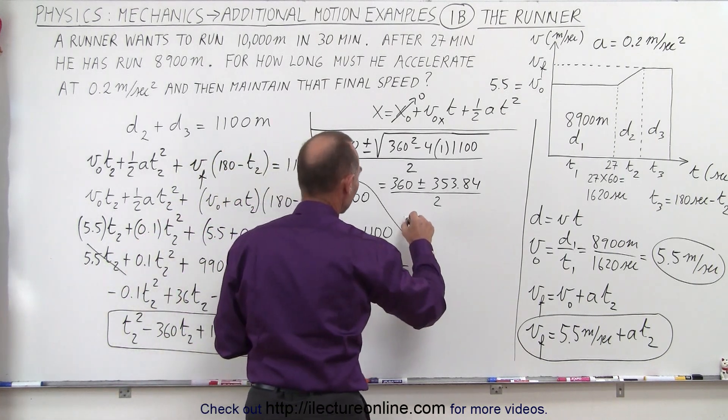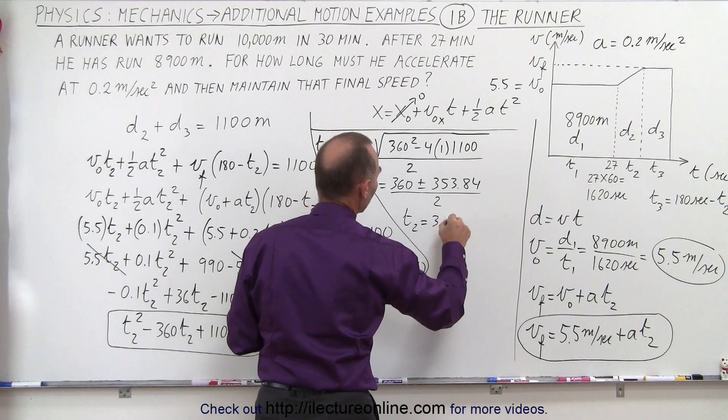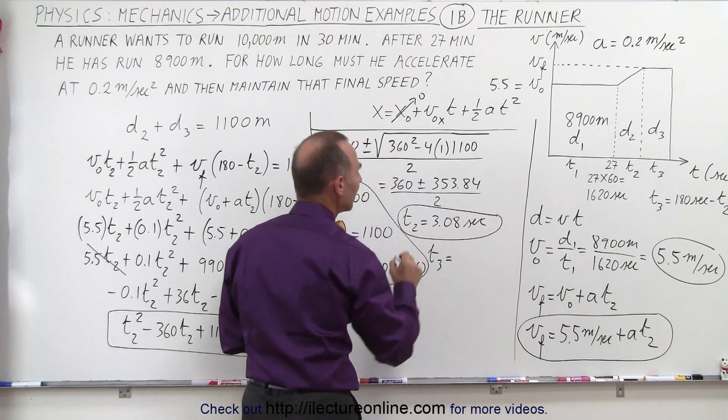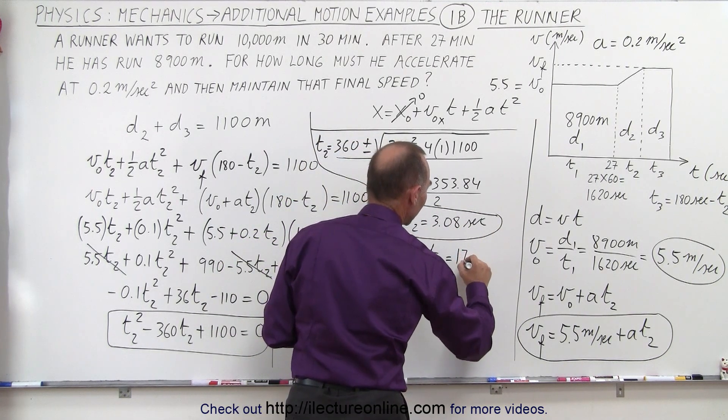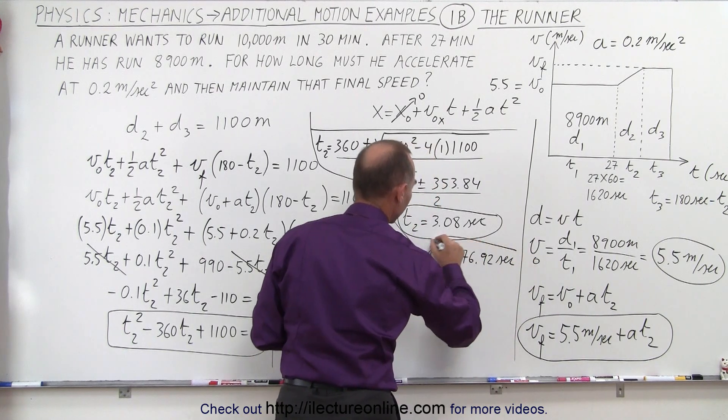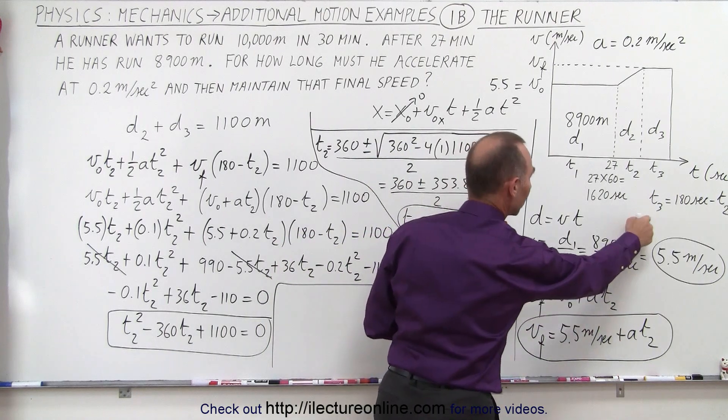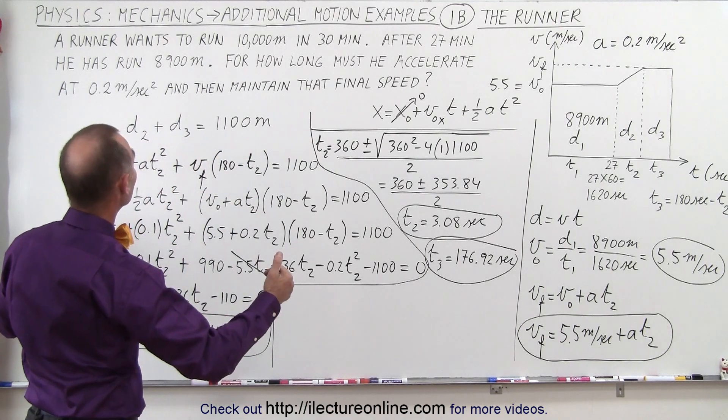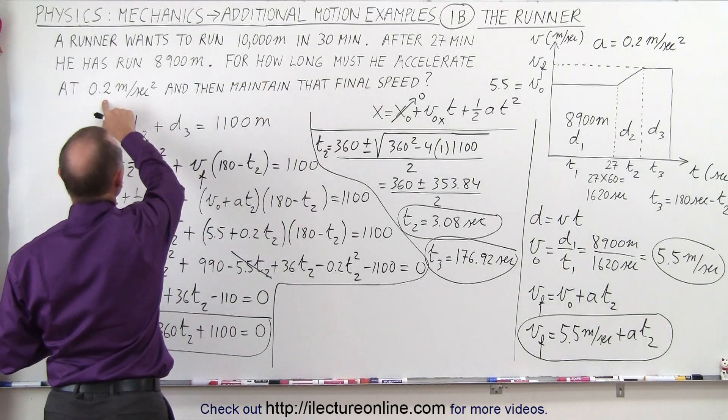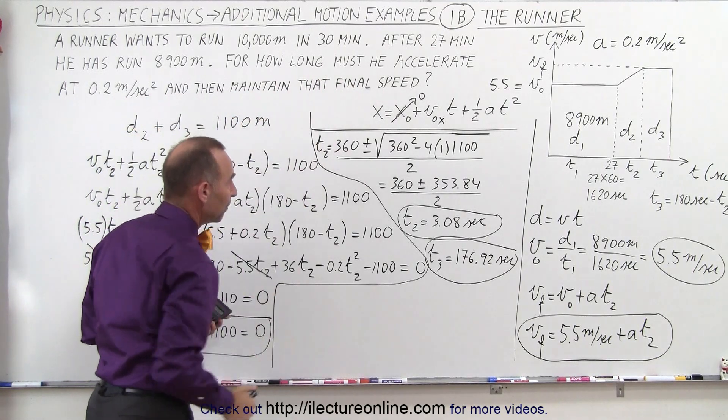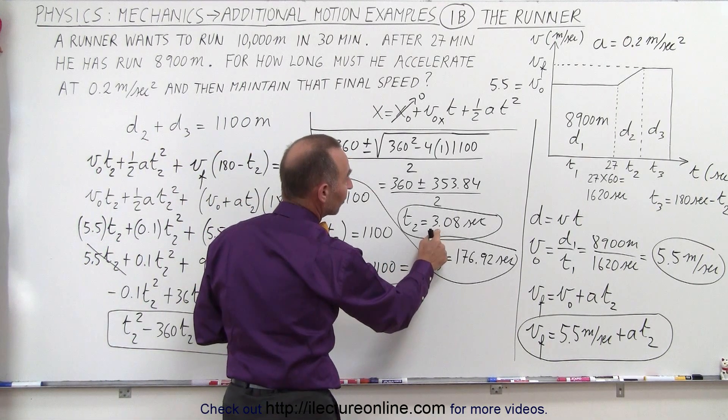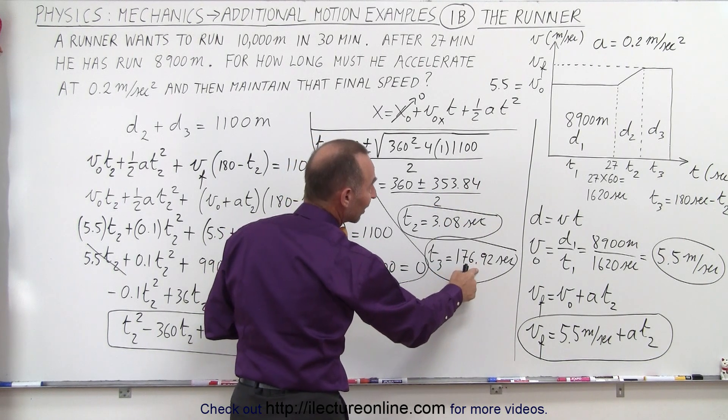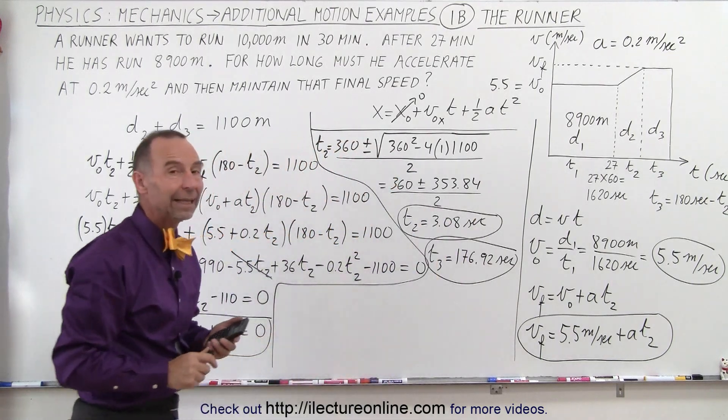And notice the only plausible answer here is when I subtract, because when I add, I get a huge number. It doesn't fit into 180, so that's not possible. So it's the minus portion. So minus, add 360, divide by 2, and I get a time of 3.08 seconds. That means t2 equals 3.08 seconds, which means that t3 is equal to 180 minus that. That would be 176.92 seconds. So now that I have the three times, I have answered the question. It says, for how long must he accelerate at 0.2 meters per second squared, and then maintain that final speed to make it in 30 minutes? He needs to accelerate for 3 seconds at 0.2 meters per second squared, so that for the last 177 seconds, he can then maintain that new speed and make it in 30 minutes.